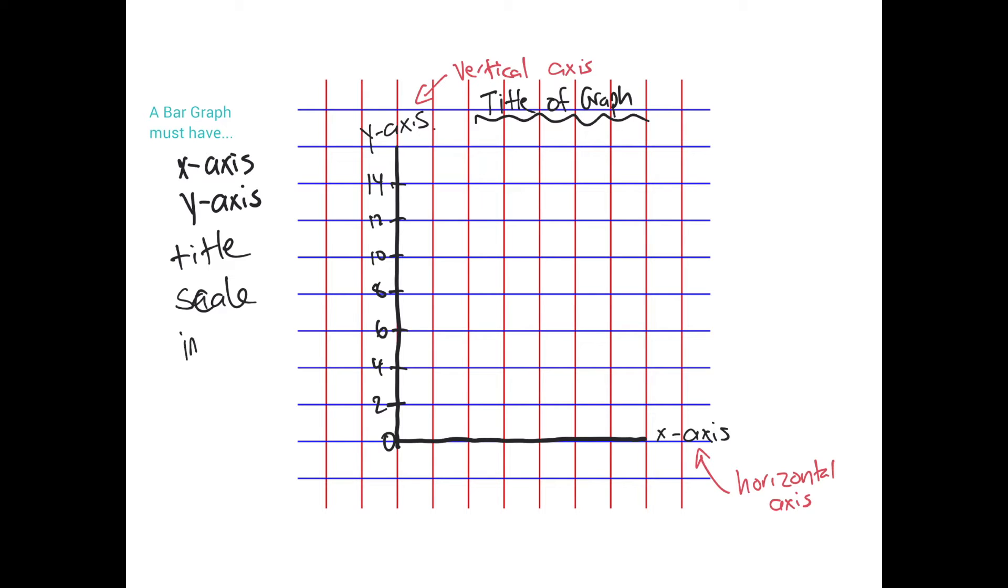And the bottom has whatever you're graphing. So it's basically your information slash options. So if we're doing favorite food here where you would have say pizza, you would have sandwich, you would have say carrots or whatever.